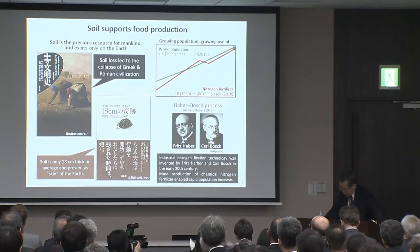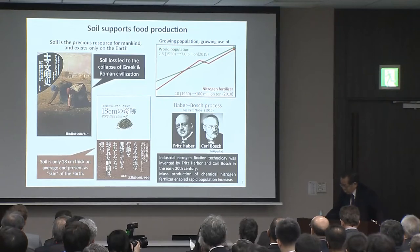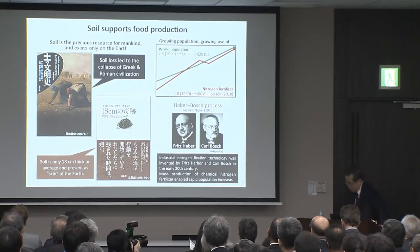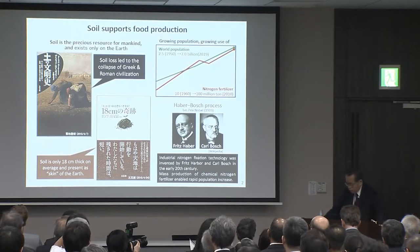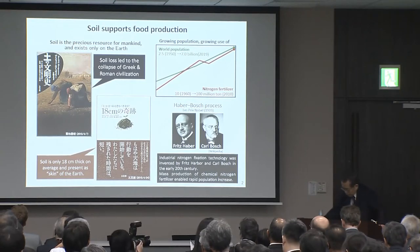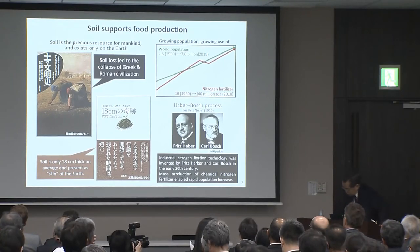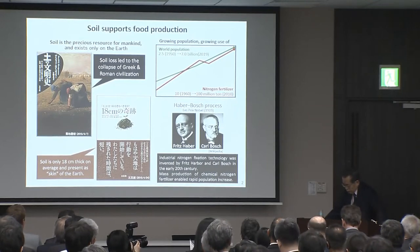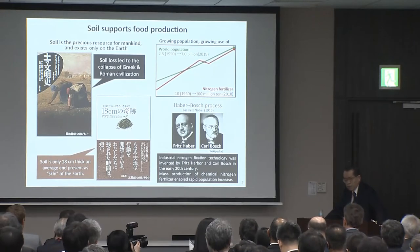Looking back to the past, the soil loss led to the collapse of Greek and Roman civilization. The soil loss has also the power to ruin our modern civilization. On the other hand, industrial nitrogen fixation was invented by Haber and Bosch in the early 20th century. Mass production of chemical nitrogen fertilizer supported explosive population increase by the green revolution.